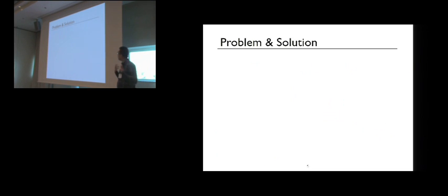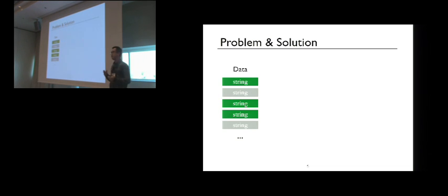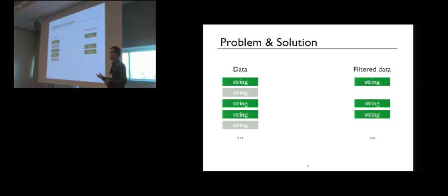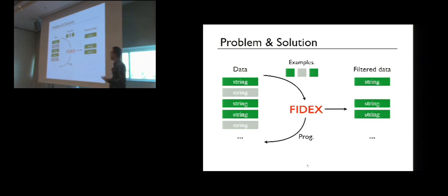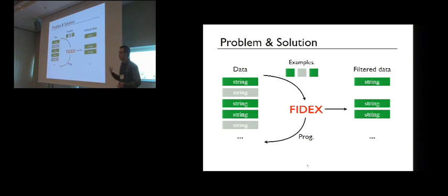More formally, the problem we're tackling is: given a set of strings including both positive and negative strings, we want to get a filter expression that returns only the subset of strings that includes the positive strings. We solve this by applying the programming-by-example technique to learn a filter expression from both positive and negative examples.